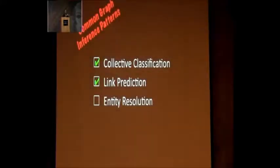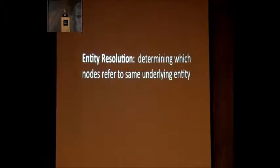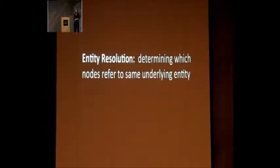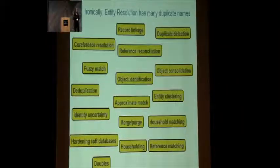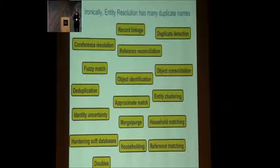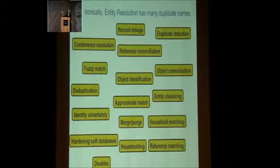The third kind of basic inference in graphs is entity resolution — figuring out when two nodes are actually referring to the same underlying entity. One of the things I find interesting about entity resolution is that it's such a ubiquitous problem in computer science that it goes by all kinds of different names. Doing the entity resolution on what people mean by these terms is very interesting, and I'm always collecting more examples.